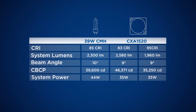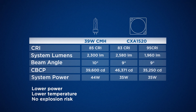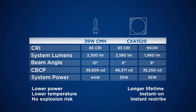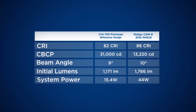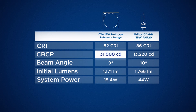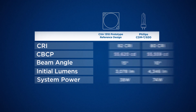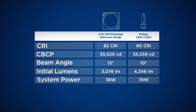Compared to a 39W CMH lamp, the CXA1520 design prototype has better performance and cost with lower power, lower temperature, no explosion risk, longer lifetime, instant on, and instant restrike. Also, the XLAMP CXA1310 prototype offers two times the candela at 66% less power than a CMH PAR20. And the XLAMP CXA1850 prototype gives 70W performance at 35W power consumption levels.